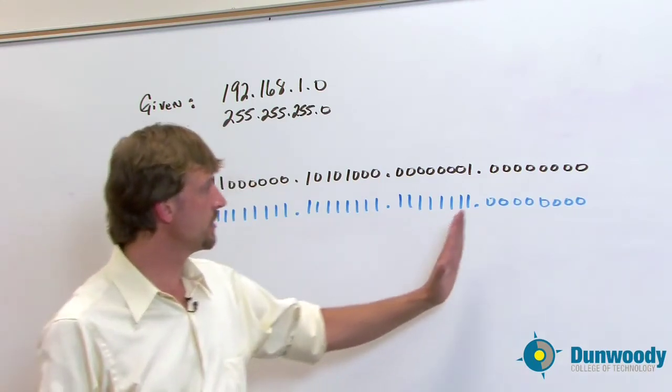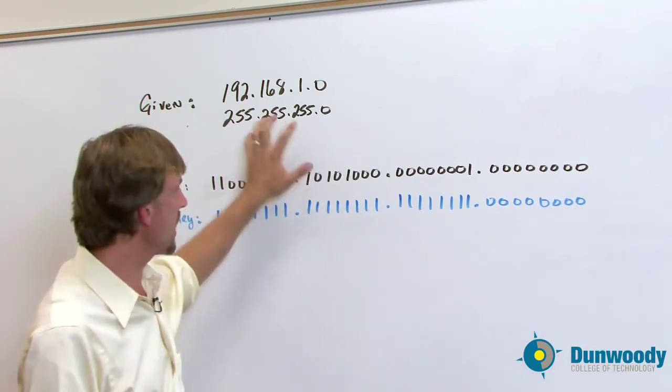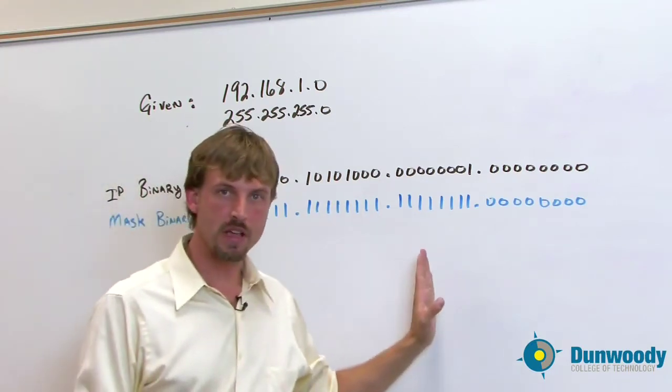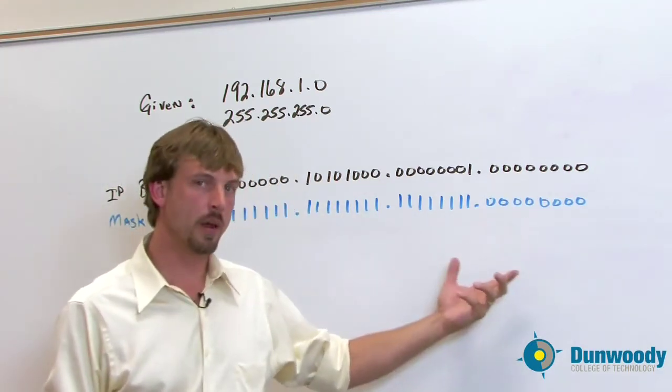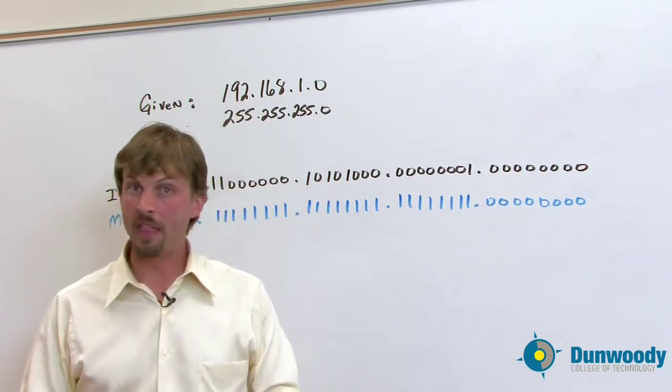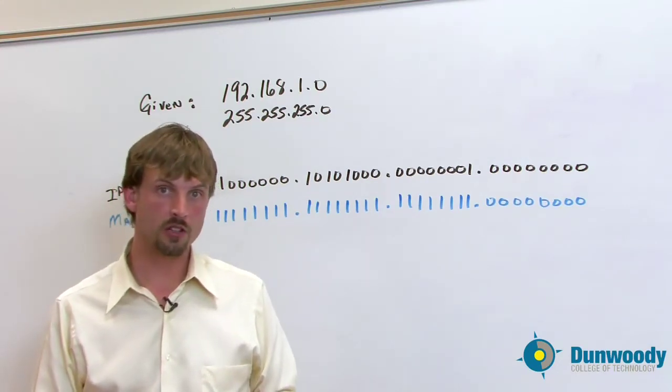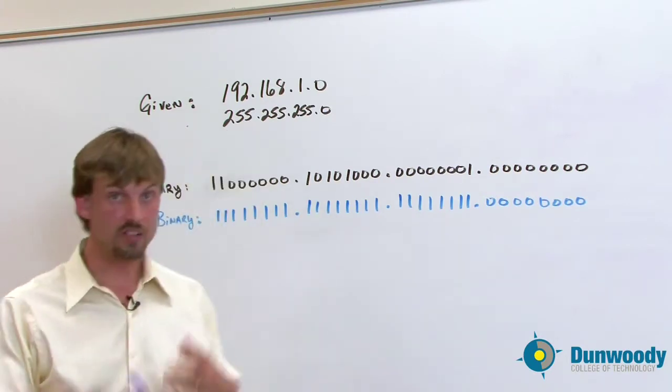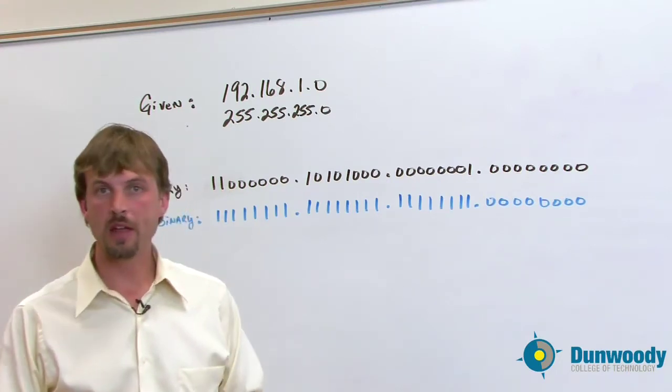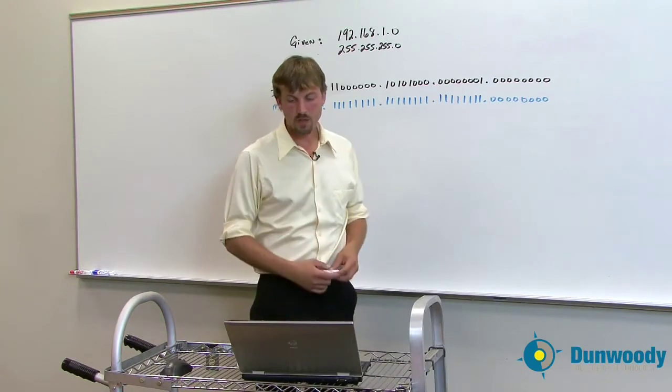What we're going to do here is take these prefixed ideas from the class A, class B ranges. This happens to be a class C address. And we're going to borrow some bits over in the host section to create more networks. See, at this point with what I've been given here, I have one logical network. And that may be fine for some environments, but in some environments we need more than one logical network. And because of what I've been given, I only have one. So I need to somehow make more. And that's what we're going to do. We're going to make some more logical networks out of this environment that we have here.